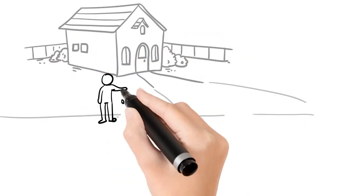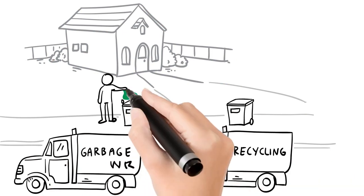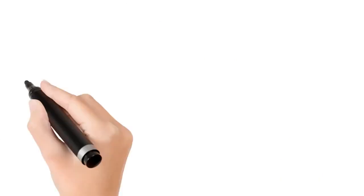Fortunately, there's a better way. With Waste Robotics, citizens now put their organics in a green bag and dump that green bag into their existing garbage bin.